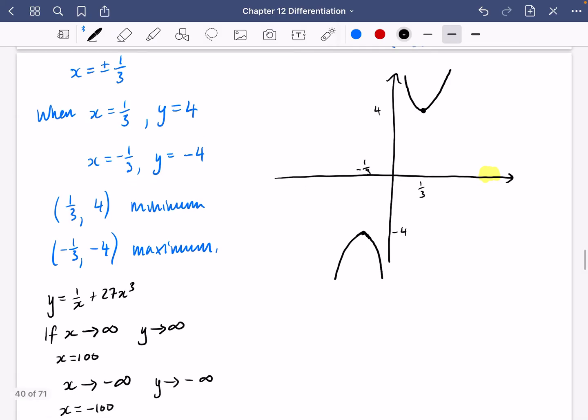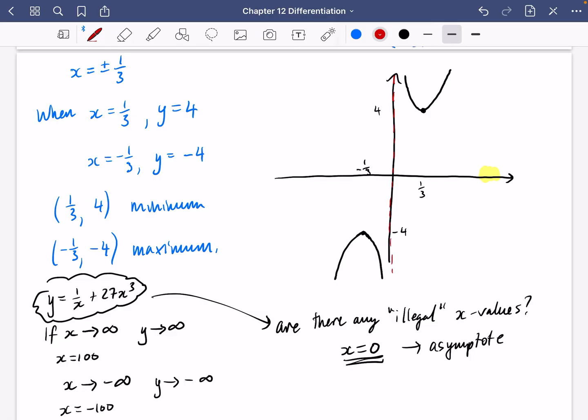There's one last thing that I want to think about for this graph. Are there any illegal x values for this expression? Well, yes, you can't put in x equals zero. This is going to be an asymptote. So this asymptote is this bit down here. You're never going to be able to get the graph close to that bit. So that is why this does not cross the axis. This black line here is not going to cross the axis.